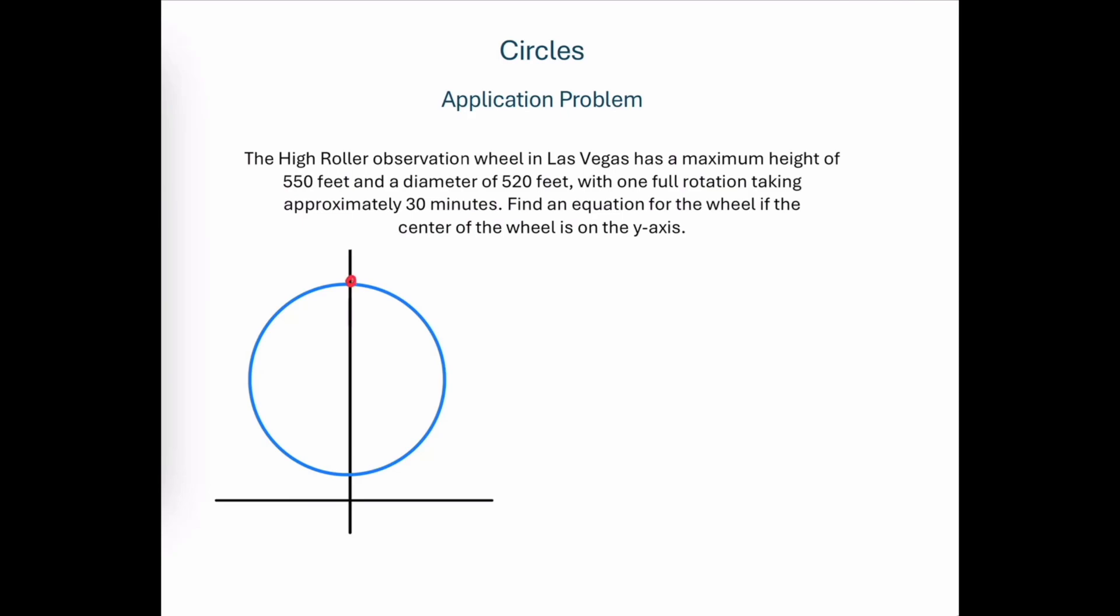We're told that the maximum height of the Ferris wheel is up at 550 feet, but we're also told that the diameter of the Ferris wheel is 520 feet. Now if that's the case, then there's some negative space here between the bottom of the Ferris wheel and the ground, and that makes sense because the carts need some space so that they don't hit the ground. So that means we've got 30 feet of clearance between the bottom of the Ferris wheel and the ground, because 550 minus 520 is equal to 30.